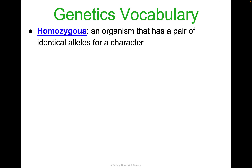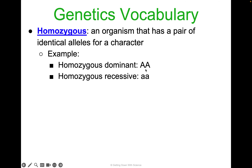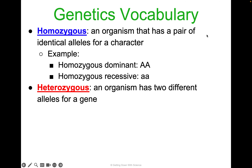Some vocabulary we're going to be using a lot: homozygous — this is an organism that has a pair of identical alleles for a character. Homozygous dominant would be two capital letters, like brown hair. Homozygous recessive is the same thing with lowercase letters, like blue eyes. Heterozygous means an organism has two different alleles for the same gene, represented by a capital and a lowercase letter.